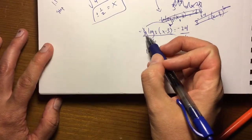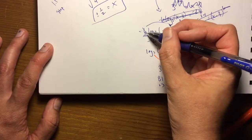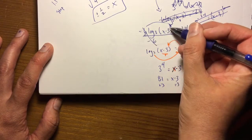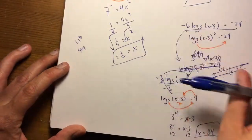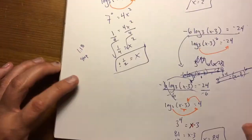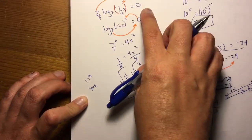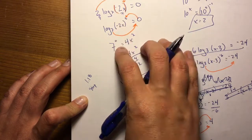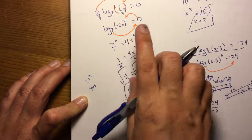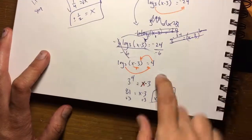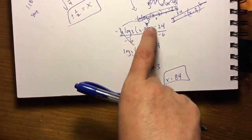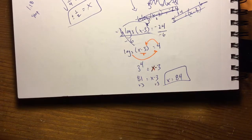Don't think just because there's a coefficient out front that you have to pull it back as an exponent every time. If you can divide both sides by that coefficient first, you get the same answer in a simpler way. That's really as complicated as you need to go into logs for right now — this is complicated enough.